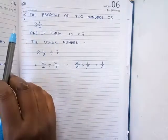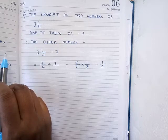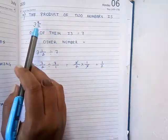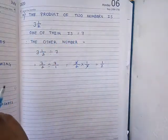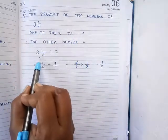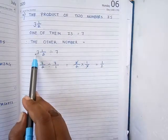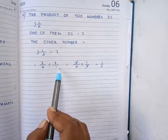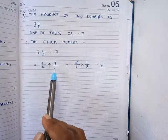Next, question number 10. The product of two numbers is 3 whole number 1/2. One of them is 7. Find the other. When the product is given and one number is given, we are finding the other number, so we have to do division. Write down the product, then divide it by one number. 2 times 3 is 6, plus 1 is 7, so it is 7 by 2. Divided by 7 by 1, because 7 is a whole number so I am writing 7 by 1.